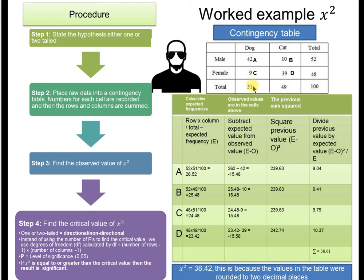B is 52 times 49 divided by 100. C is 48 times 51 divided by 100. And then D is 48 times 49 divided by 100. That gives us this first column. The second column, we subtract the E from the expected frequencies that we've just calculated. This is the E column. We take the expected frequencies and we minus from it the actual observed values.